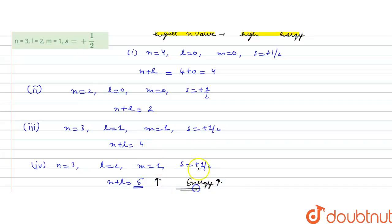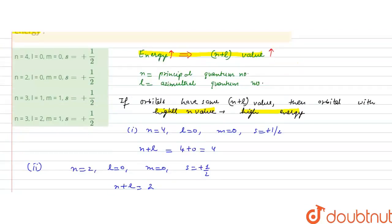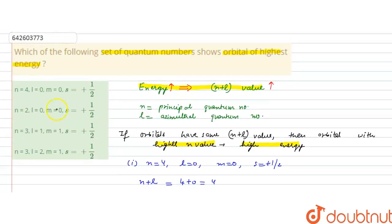So the orbital with the highest energy corresponds to the set of quantum numbers n=3, l=2, m=1, s=+1/2. Therefore, option D is the correct answer. I hope you understood the solution, thank you.